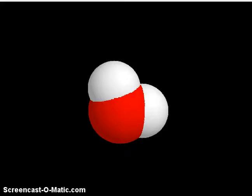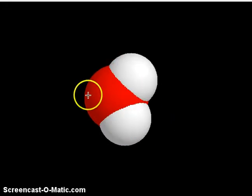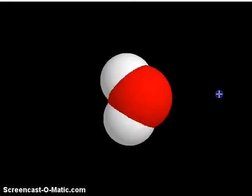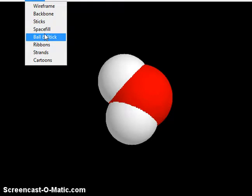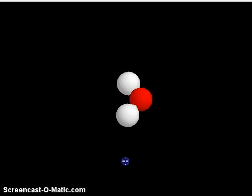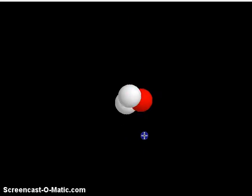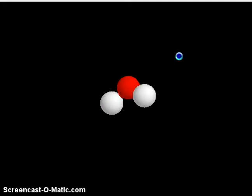Here we see a computer model of the water molecule. The space-filling model shows the red region representing the oxygen atom and the white regions representing the hydrogen atoms — two hydrogens and one oxygen. The ball and stick model also reveals that there is an angle between the atoms, which we typically call the bent structure of water.